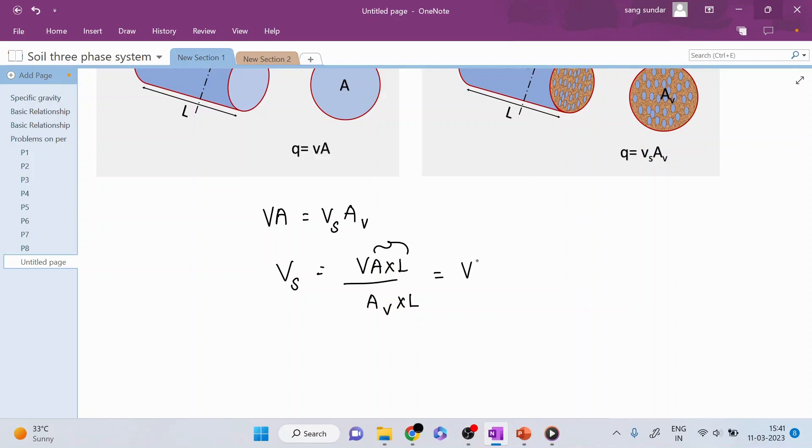To differentiate, this lowercase v represents velocity, which is discharge velocity. And this capital V indicates area times length, which is volume. Divided by Av times L, which represents area of void times length, that gives you void volume.